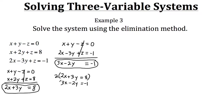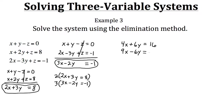After multiplying the top equation by two: two times two x gives four x, two times three y gives positive six y, and two times eight gives sixteen. After multiplying the bottom equation by three: three times three x gives nine x, three times negative two y gives negative six y, and three times negative one gives negative three.